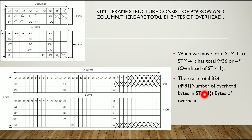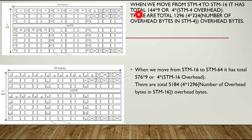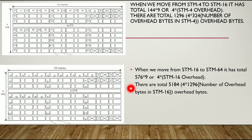So it is 4 into HTM 1, and total number of overhead bytes is equal to 324. When we move from HTM 4 to HTM 16, it has total 144 columns into 9, which is equal to 4 into HTM 4 overhead. There are total 1296, which is equivalent to 4 into 324 overhead bytes. When we move from HTM 16 to HTM 64, it has total 576 into 9, which is equal to 4 into the number of overhead bytes in HTM 16.